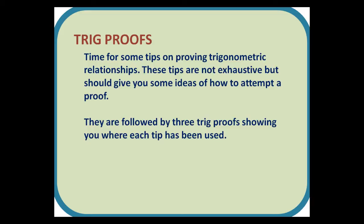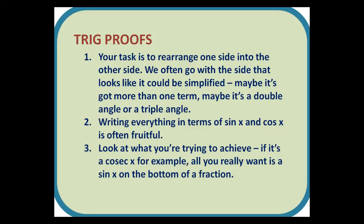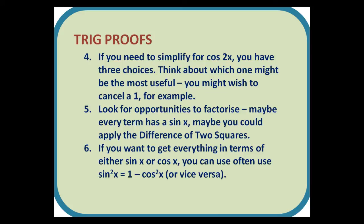Trig proofs. Time for some tips on proving trigonometric relationships. These tips are not exhaustive but should give you some ideas of how to attempt a proof. They are followed by three trig proofs showing you where each tip has been used. Number 1: Your task is to rearrange one side into the other side. We often go with a side that looks like it could be simplified - maybe it's got more than one term, maybe it's a double angle or a triple angle. Point 2: Writing everything in terms of sin x and cos x is often fruitful. Number 3: Look at what you're trying to achieve. If it's a cosec x, for example, all you really want is a sin x on the bottom of a fraction. Number 4: If you need to simplify for cos 2x, you have three choices. Think about which one might be the most useful. You might wish to cancel a 1, for example.